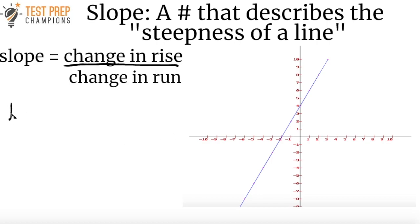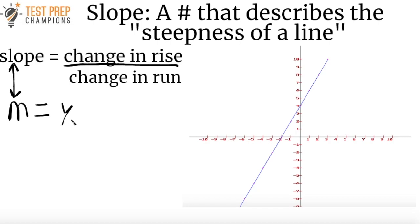Now we can write another formula which is probably one of the most important formulas to know for the GED test. You don't have to memorize this, but you do need to be familiar with it and know how to use it. This little M right here means slope — so if you see the letter M, it means slope. The slope is equal to y2 minus y1 divided by x2 minus x1.